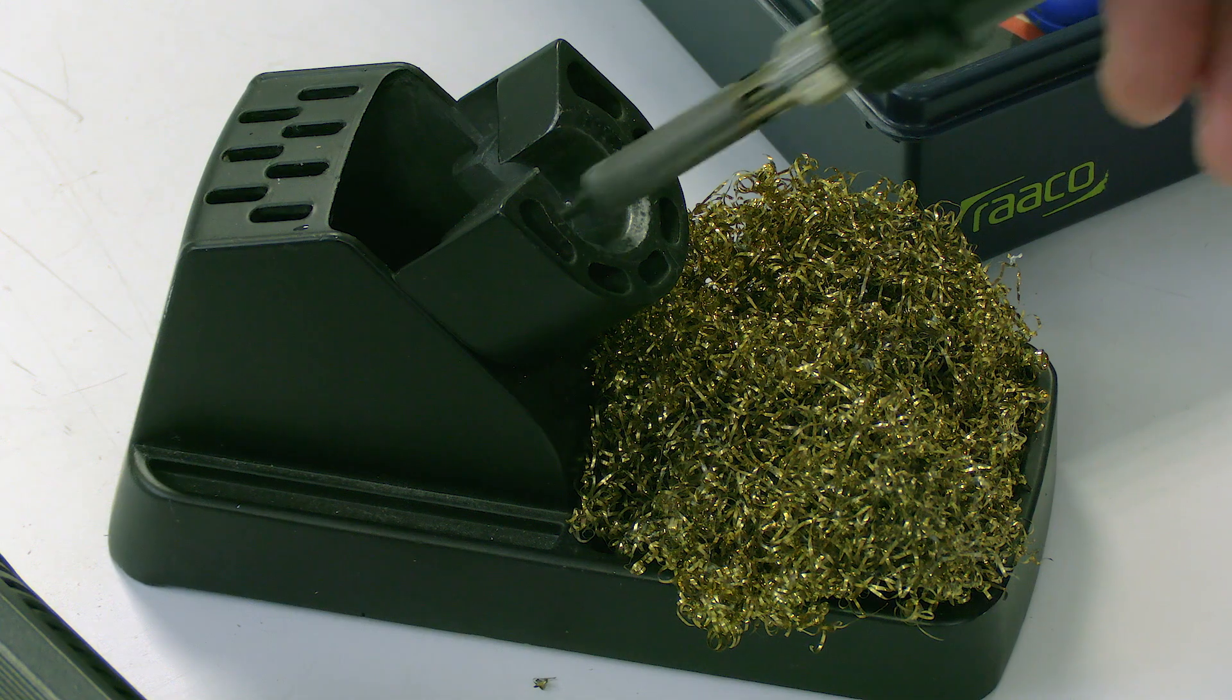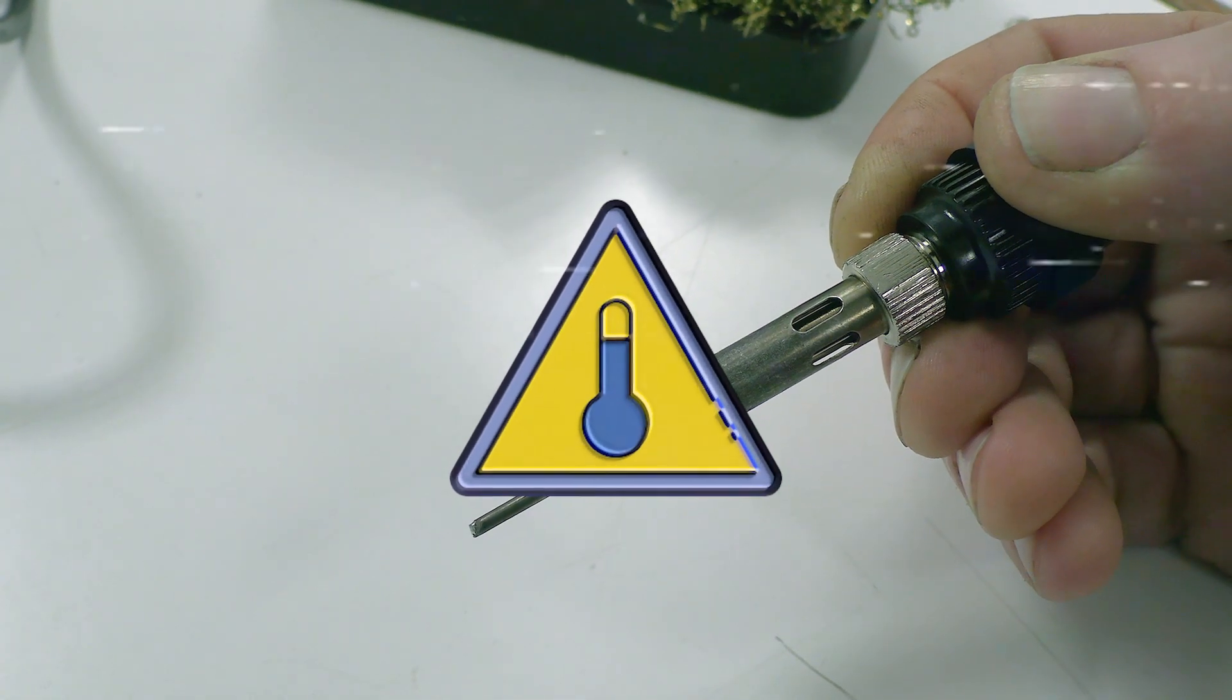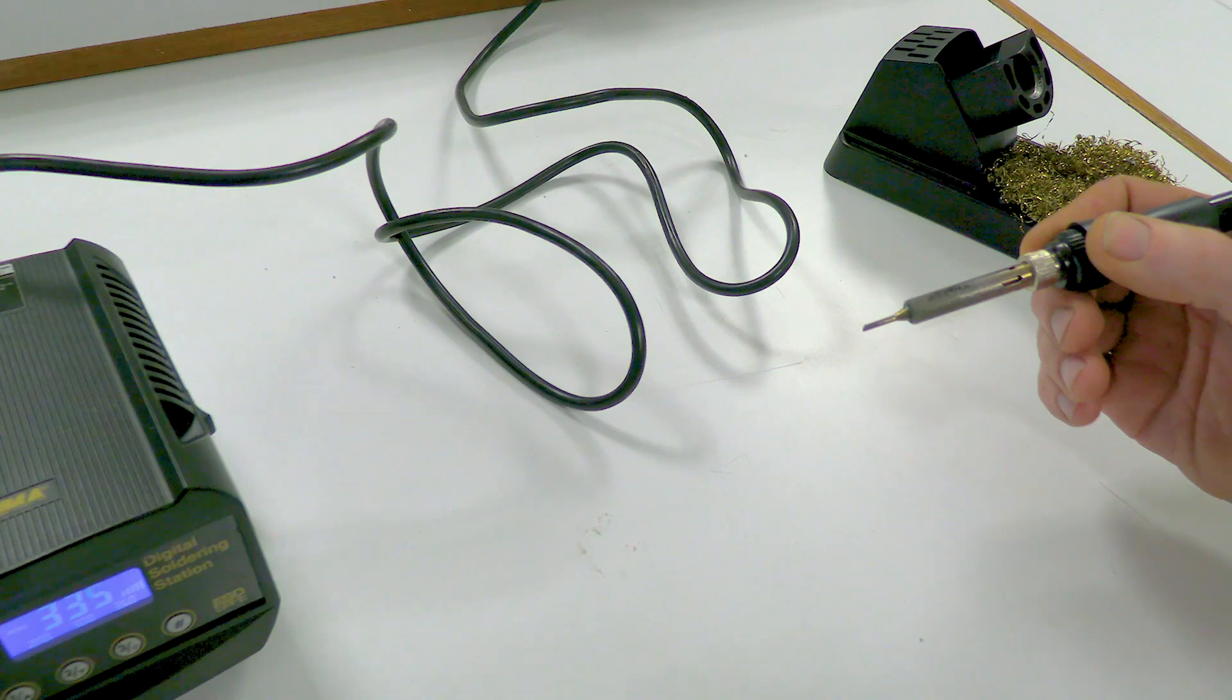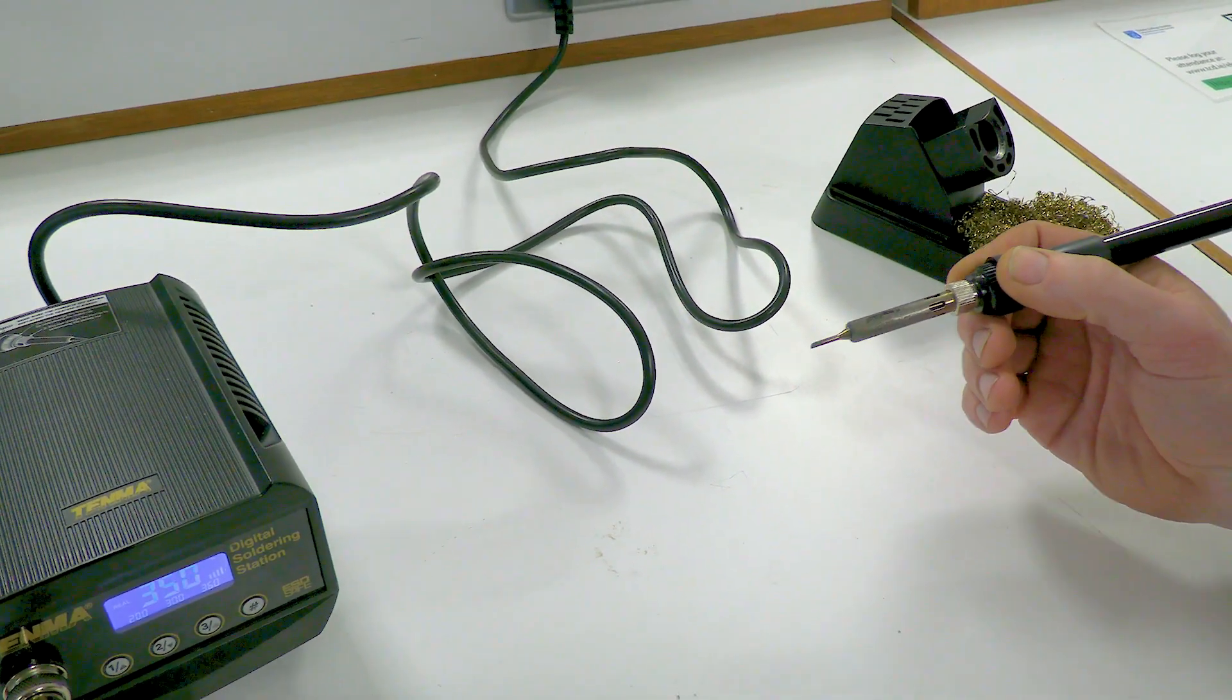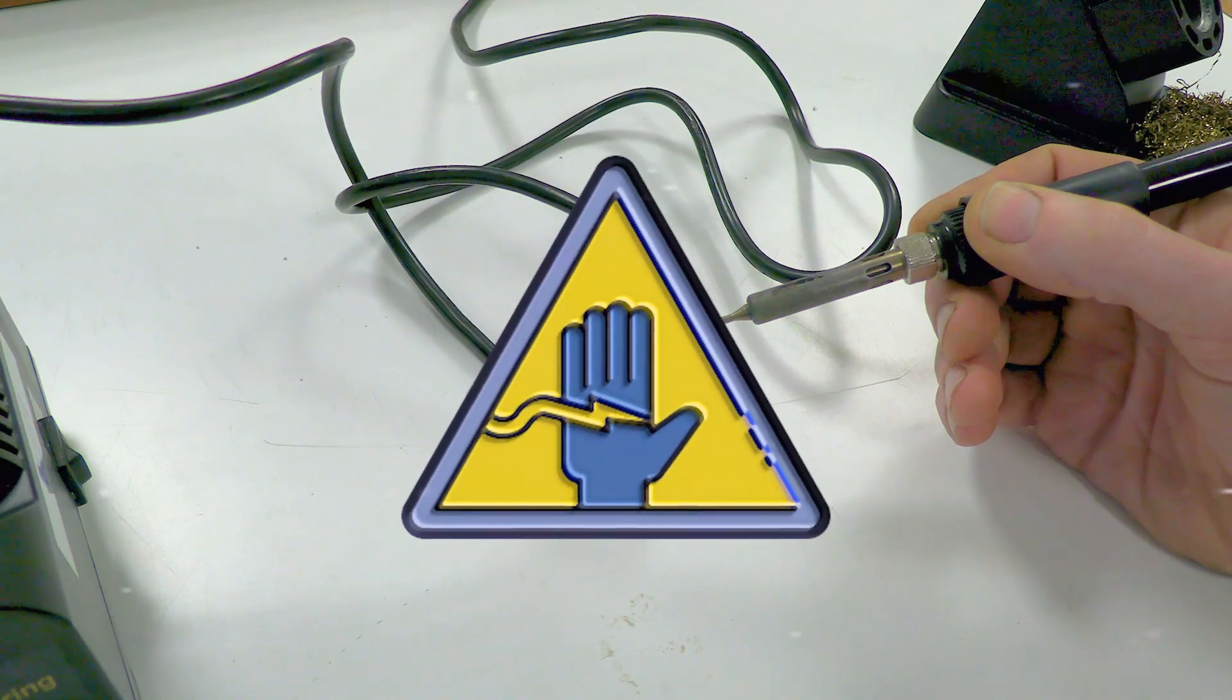The iron should always be kept in the holder when not in use. You should never touch the iron element as it is extremely hot when in use. Be especially careful not to touch the main power cable with the iron. The cable could melt easily leading to risk of electric shock.